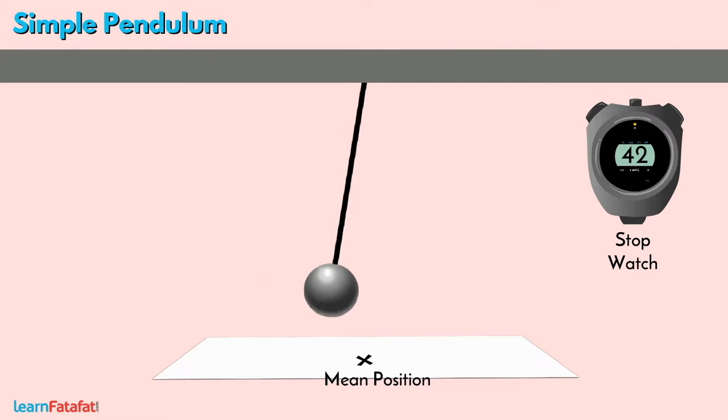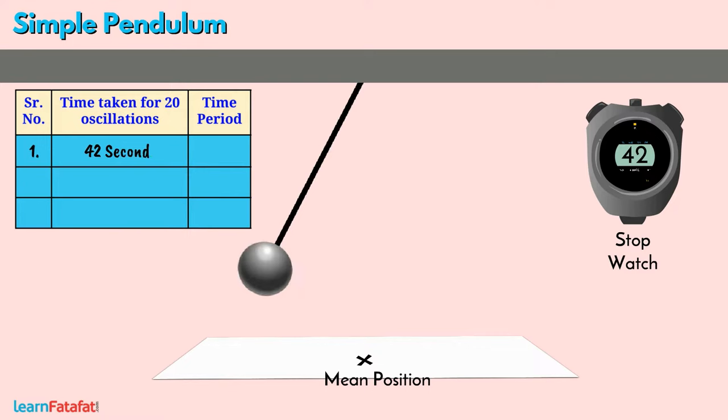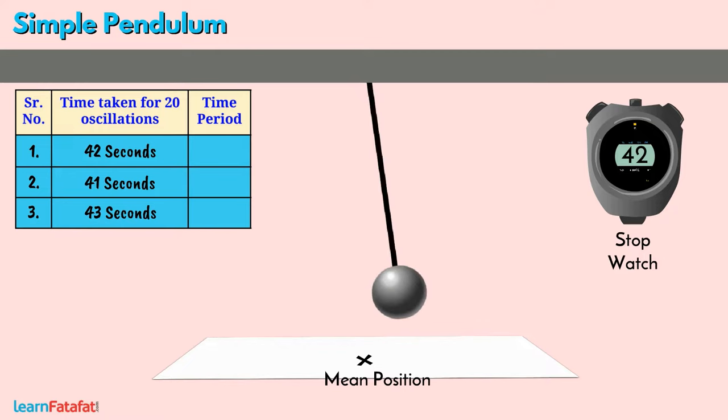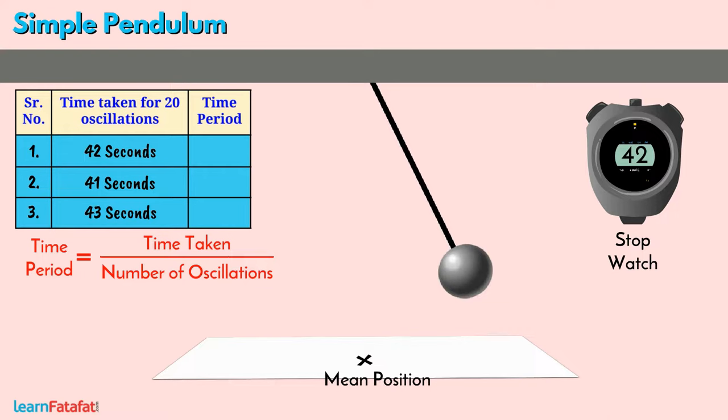Make a table and enter the time taken to complete 20 oscillations. Take a few readings performing similar activity and note down all the readings. For each reading, calculate the time period of the pendulum by dividing time by number of oscillations, that is 20.